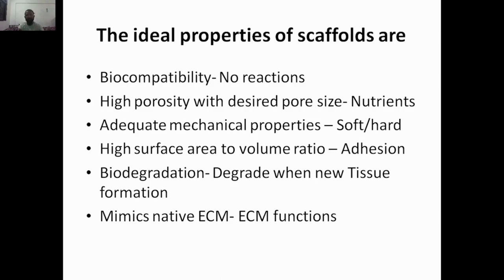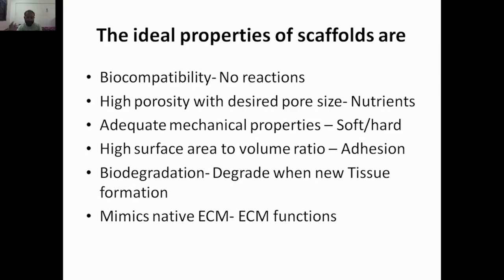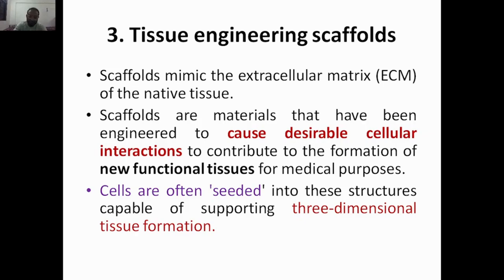Ideal scaffold properties include: high porosity with the desired pore size so nutrients can pass through; adequate mechanical properties — soft for soft tissue or hard for bones and cartilage; high surface-area-to-volume ratio so more cells can attach, proliferate, and form tissue faster; biodegradation — once new tissue is formed, the scaffold should degrade and not remain permanently; and mimicking native ECM to provide structure and mechanical support for cell growth. The topic of tissue engineering scaffolds will be discussed in the next class.